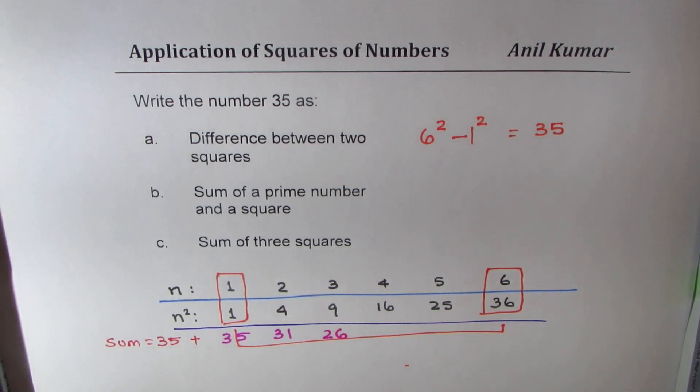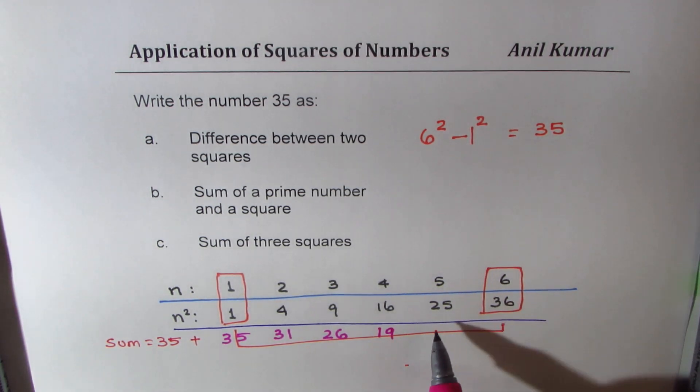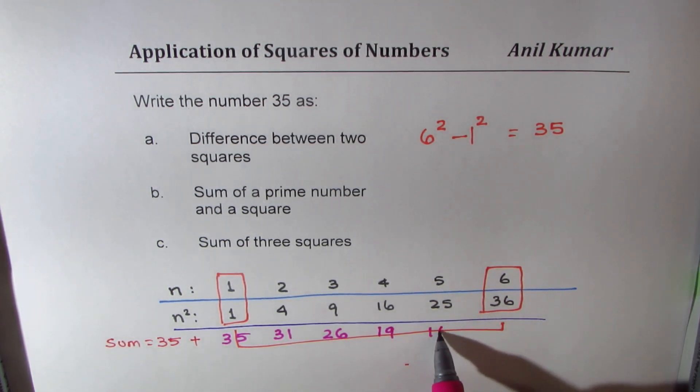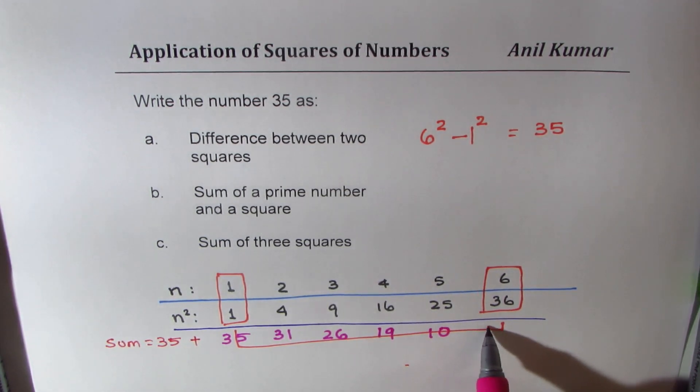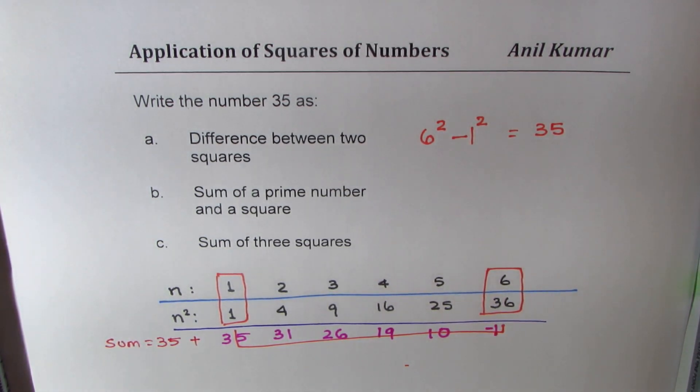Now, in this case, to get 35, I have to add 9 plus, that is 19, which is also a prime number. Now, here to get 35, I have to add 10. And here, actually, I have to subtract. So, we have two solutions.